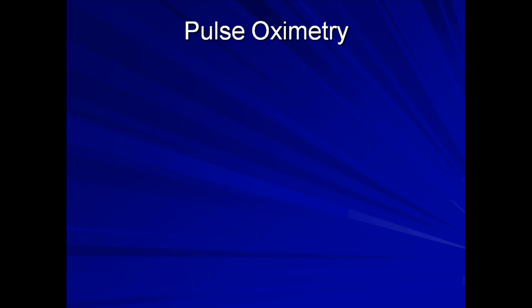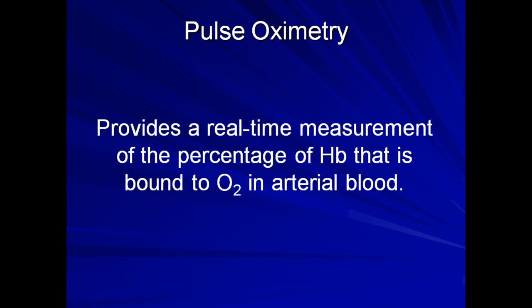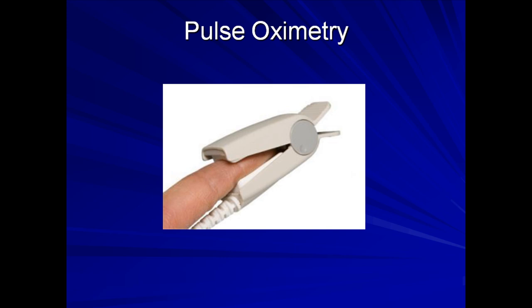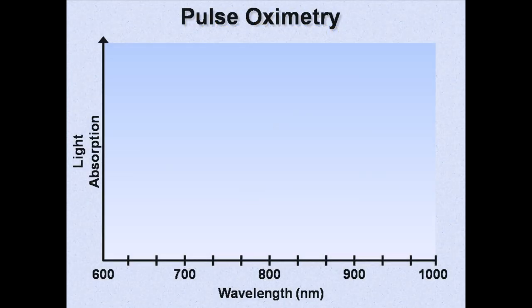We'll now move on to pulse oximetry. Pulse oximetry provides a real-time measurement of the percentage of hemoglobin that is bound to oxygen in arterial blood. Here's a picture of a typical pulse oximeter probe — usually a small hinged device that loosely clamps around the fingertip. There are also probes that are thinner and taped directly to the patient's skin for less artifact. To understand how this device works, we need to look at a chart relating the relative degree of light absorption of oxygenated and deoxygenated hemoglobin over a range of wavelengths.